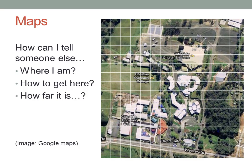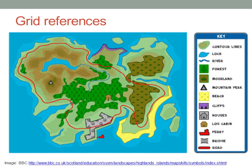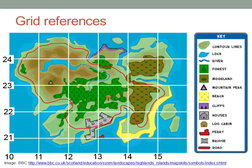But sometimes that's not precise enough. Let's use a simpler map so we can see what's happening more clearly. The eastings and northings are labelled with numbers that increase towards the right and up the page.